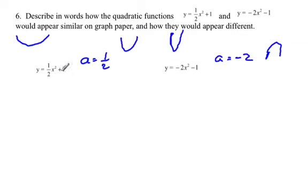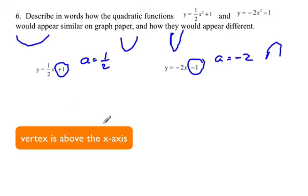The other difference is when you look at the k here, k is positive one in the first one, k is negative one in the second one. That means that this y-intercept is going to be at—this parabola is going to shift up. So the intercept is going to be, or the vertex I should say, is going to be at 0, 1.